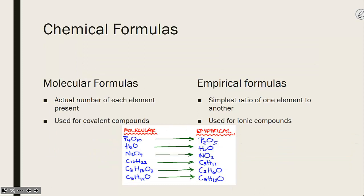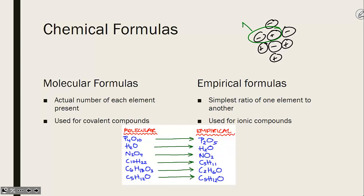When we talked about ionic compounds — truly positive ions and truly negative ions that surround one another — there is no distinct number of each ion present. So when we list their formulas, we list the simplest ratio of one ion to another. This is known as an empirical formula: the simplest ratio of one element to another. For ionic compounds, this is the only formula we have.